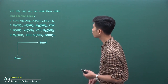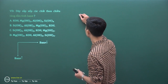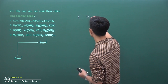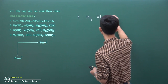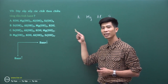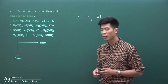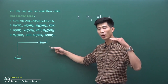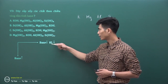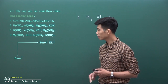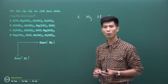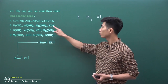Các nguyên tố ở đây là Kali, Magie, Nhôm, Silic. Khi đi so sánh tính bazơ, quan tâm đến nguyên tố kim loại ở trong bazơ đó. Tính bazơ biến đổi tuần hoàn tương tự như tính kim loại: trong một chu kỳ theo chiều tăng dần điện tích hạt nhân, tính bazơ giảm; trong một nhóm tính bazơ tăng tương tự tính kim loại. Đừng quan tâm đến các bazơ nếu chưa hiểu công thức.